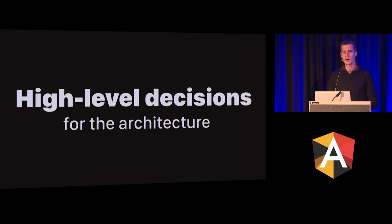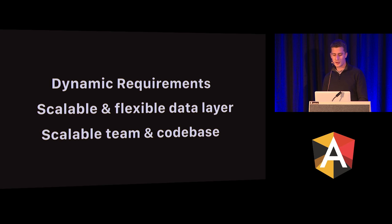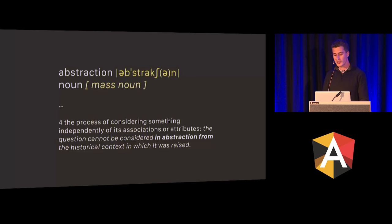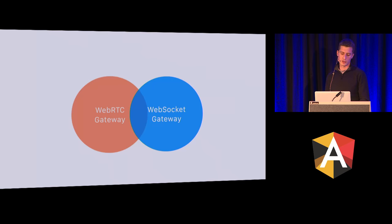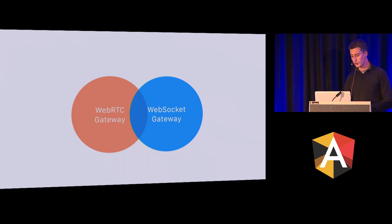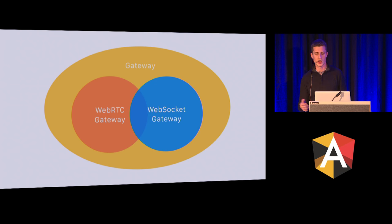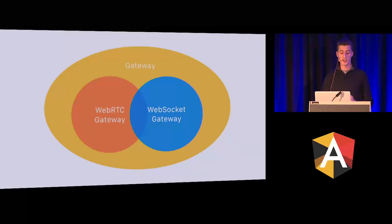These high-level constraints somehow determine the high-level decisions we need to make. To handle the dynamic requirements and the flexible data layer, we can apply a foundational principle from object-oriented programming — abstraction. We're going to get some concrete implementations, extract the common functionality between them, put it into some abstract class, and also define abstract operations there which later need to be specialized and implemented by the concrete implementations.